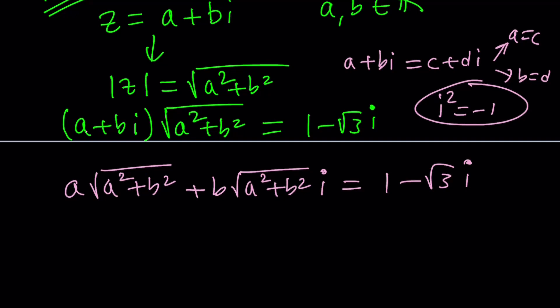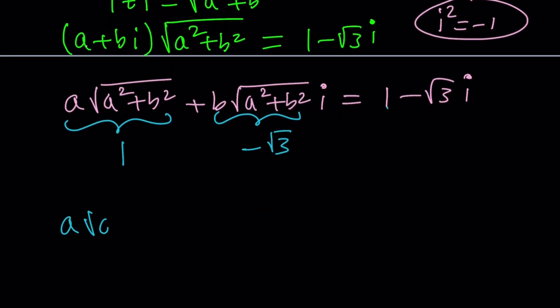Now, look at the left-hand side. This is the real part, it's equal to 1. This is the imaginary part, it's equal to negative root 3. So, we got two equations. Let's go ahead and write them. That's going to give us a system. And then we'll talk about solution methods. One of them is A times the square root of A squared plus B squared equals 1. And the other one is similar.